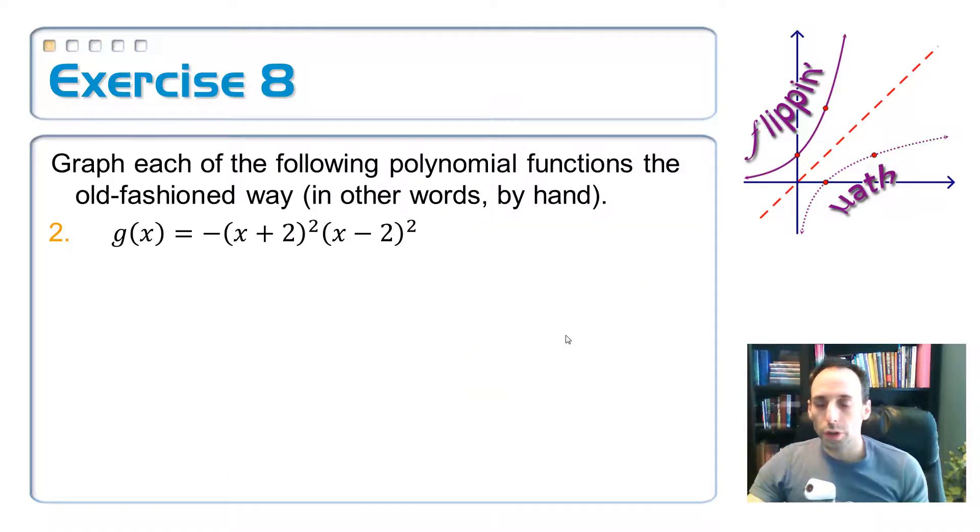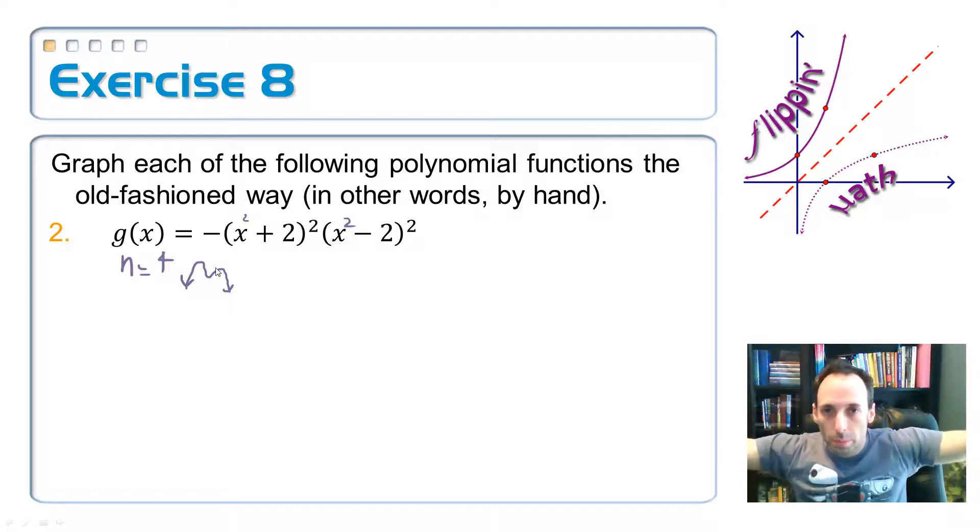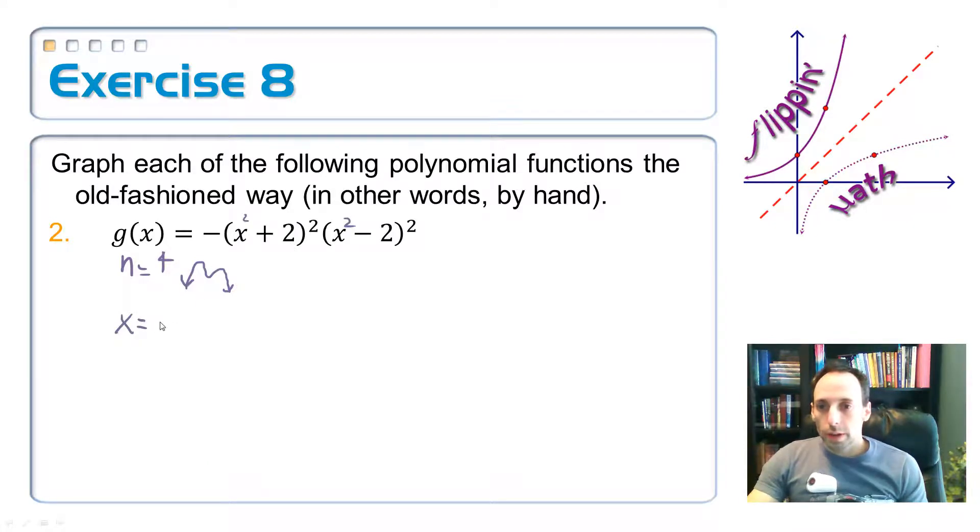Let's try another one of these together. So I've got g of x equals negative x plus 2 quantity squared and x minus 2 quantity squared. So my degree here is I've got this would be an x squared and this is going to be an x squared whenever you foil that thing out. And then x squared times x squared is x to the fourth. So fourth degree. And it's negative, which means I should expect it to do something like this. It's a referee. Both ends are pointing downwards.